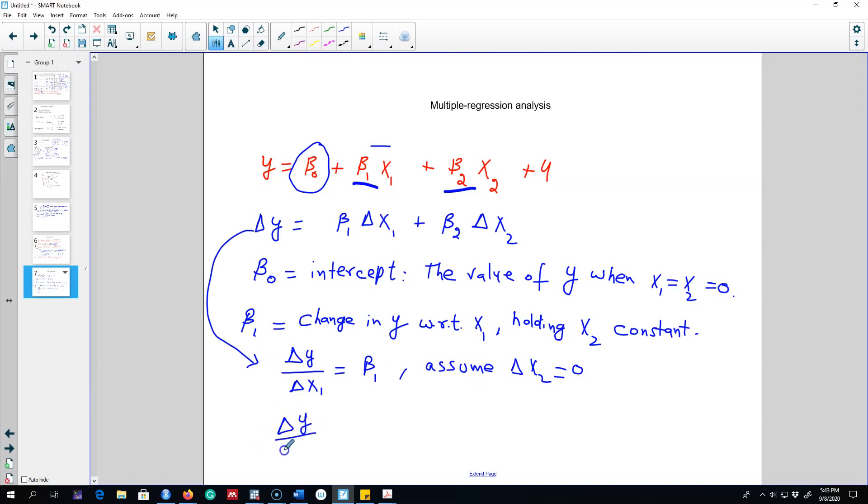Similarly, what is the impact of a change in x2 on y? It is beta 2 holding x1 constant. That is, we assume that x1 is not changing. That is the interpretation of this beta coefficient beta 1 and beta 2.